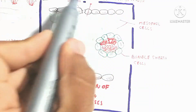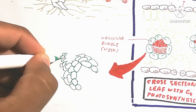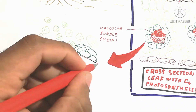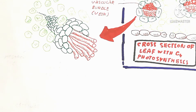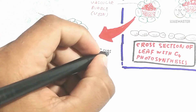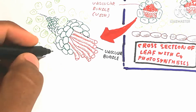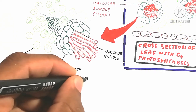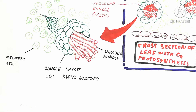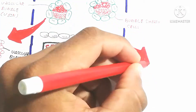Here is the vascular bundle shown in red, surrounded by the bundle sheath cell. This bundle sheath cell is a very important character, and it is surrounded by the mesophyll cell. The mesophyll cell does not carry out the Calvin cycle — the bundle sheath cell is responsible for performing the Calvin cycle.